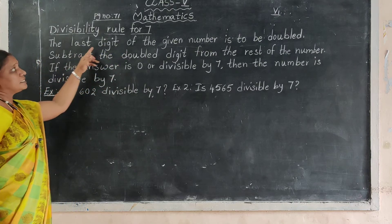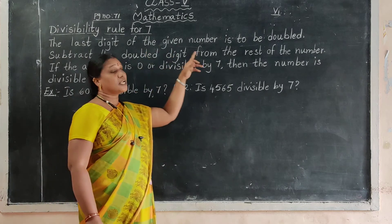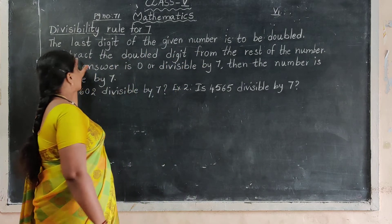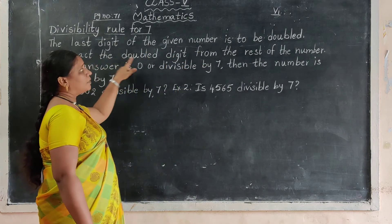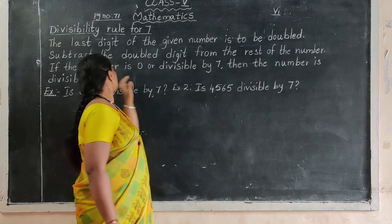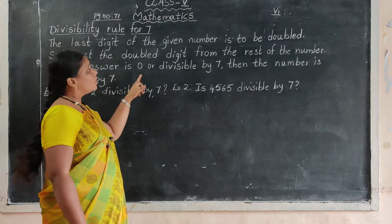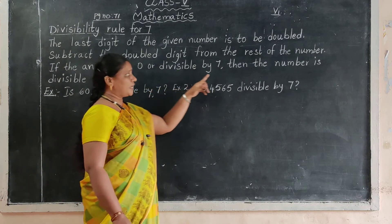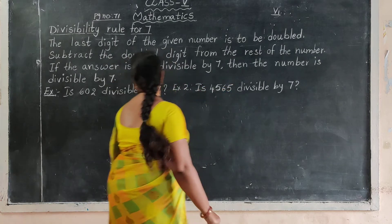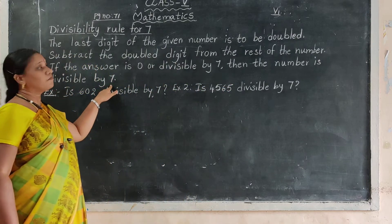The last digit of the given number is to be doubled. Separate that double digit from the rest of the numbers. If the answer is 0 or divisible by 7, then the number is divisible by 7.